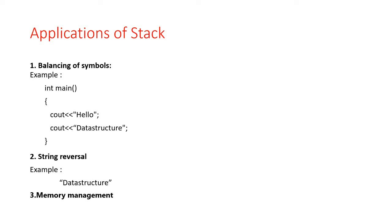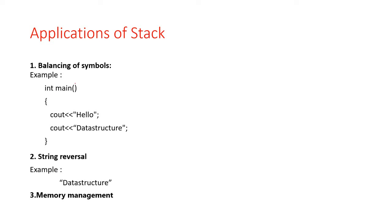The Stack is used for balancing symbols. For example, we have this type of program. In this program, the int main function is used, and there are two statements — cout hello and cout data structure. As we know, each program has an opening bracket and closing bracket. When the opening bracket comes, we push the bracket onto the Stack. When the closing bracket appears, we pop the opening bracket from the Stack.